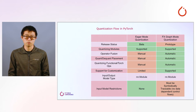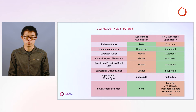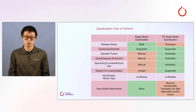fx graph mode quantization is implemented through automatically transforming the model graphs based on configurations. But since it uses Torch fx symbolic tracing to capture the PyTorch program, only the models that can be symbolically traced are supported. For example, models with data-dependent control flows are not supported by this tool.